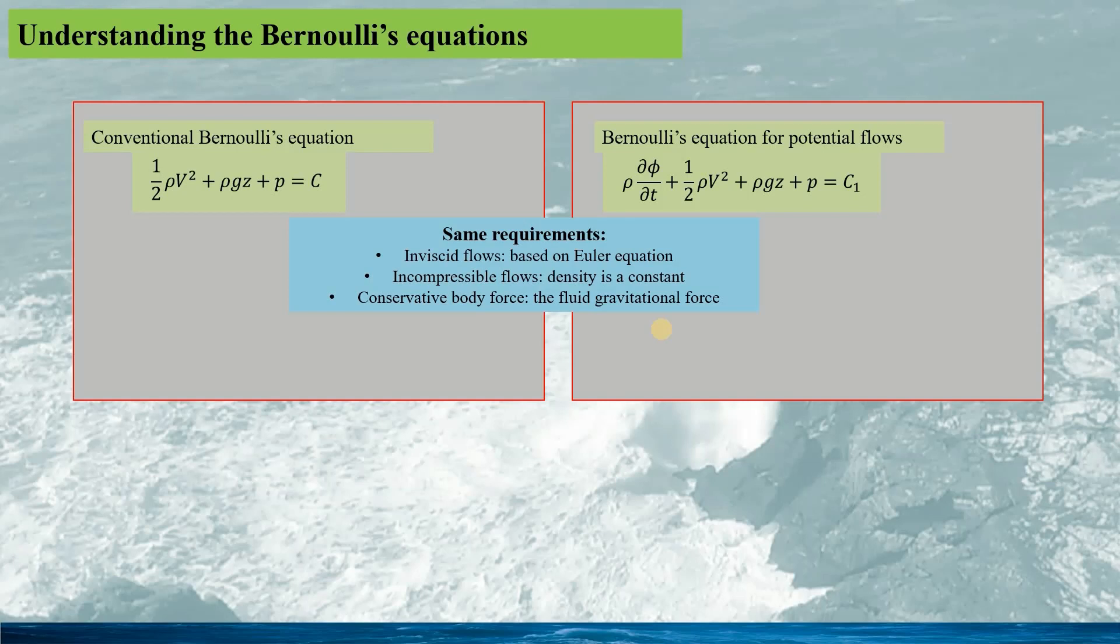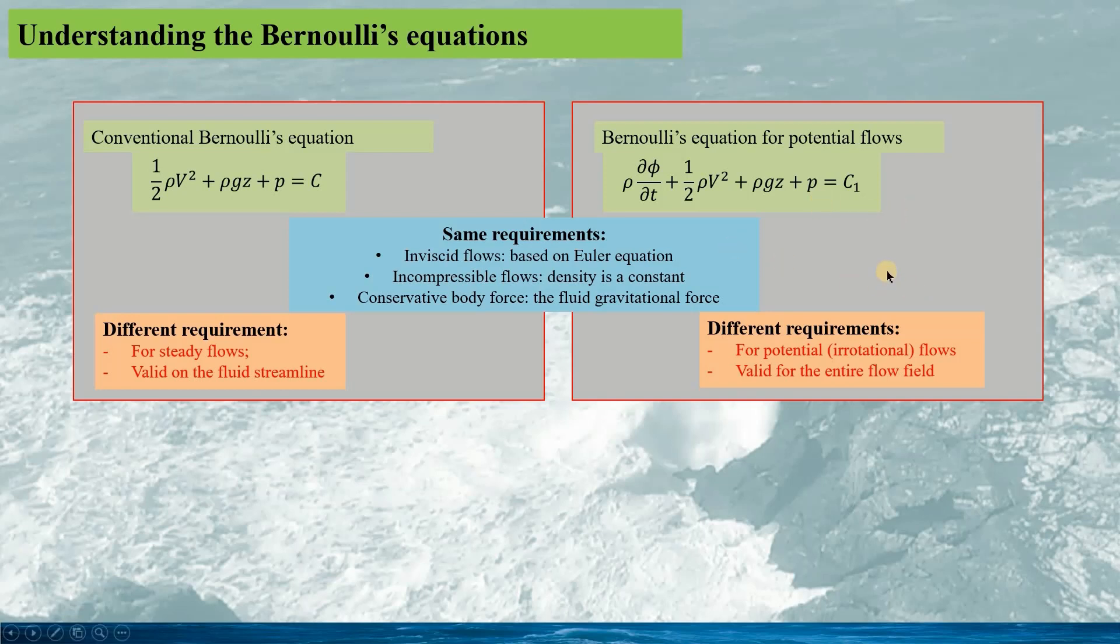The conservative body force - the fluid gravitational force is a conservative force. For these two different Bernoulli's equations, they have also specific requirements. For the conventional Bernoulli's equations, the flow must be steady and it is only valid on the flow streamline. For the potential flow, the important assumption is the flow is irrotational, and this Bernoulli's equation is valid for the entire flow field.